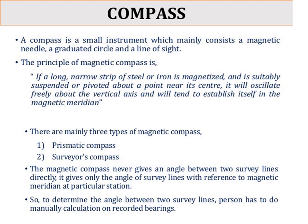If a long narrow strip of steel or iron is magnetized and is suitably suspended or pivoted about the point near its center, it will oscillate freely about the vertical axis and will tend to establish itself in the magnetic meridian. The types of magnetic compass are: first, prismatic compass, and second, surveyor compass.